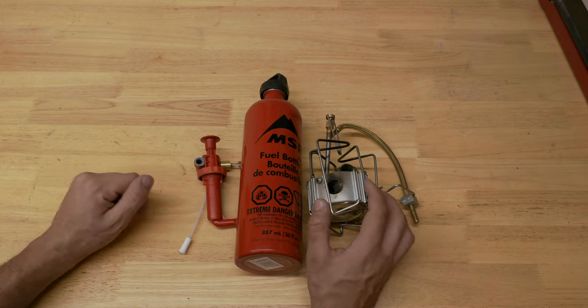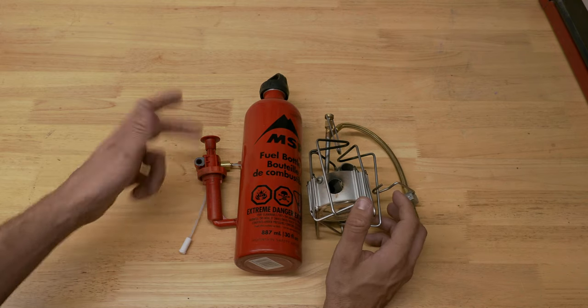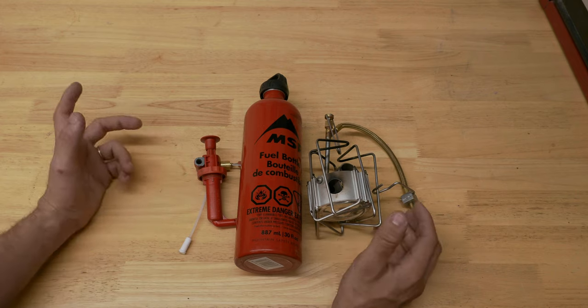It's basically some lube, some o-rings, and a tool to clean out the jets and stuff on here. And an extra jet for a different style of fuel other than gasoline or white gas. Okay, so this is your basic kit. This is what you get.